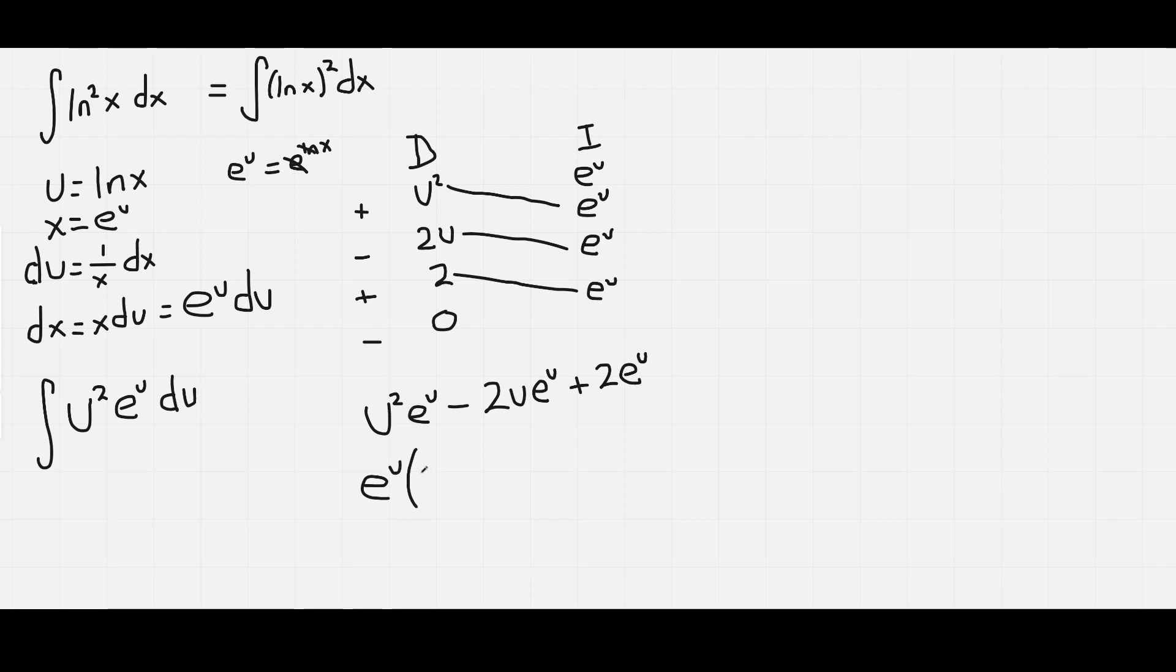And we have u squared, which will be multiplied by one, so that's just u squared, take away 2u. And then that becomes one, so it's just 2u plus, and 2 times 1 is 2. So there we go.